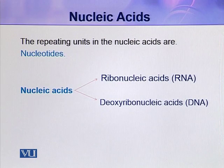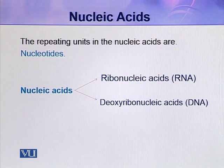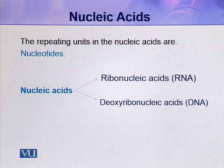Deoxyribonucleic acid, DNA, is only of one type — there are no other types of DNA. DNA is mainly present in the nucleus, in addition to chloroplasts and mitochondria. The sequence of amino acids in a protein molecule depends on the nucleotide sequence in the DNA molecule, so the DNA molecule describes the amino acid sequence of a protein.